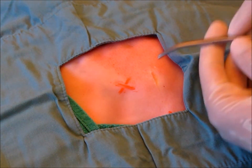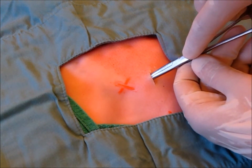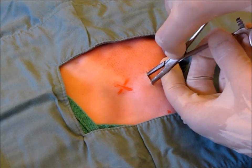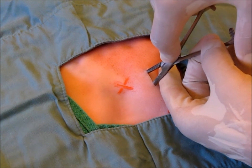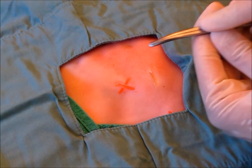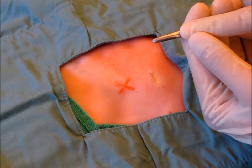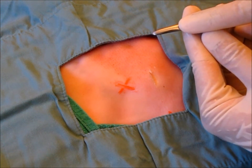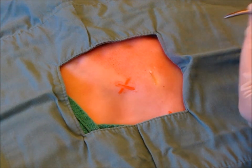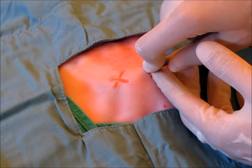Again, using the kelly, advance it using a two-handed technique towards the intercostal muscles, taking care to avoid the neurovascular bundle on the inferior aspect of the superior rib. Once the intercostal muscles are reached, you may spread the kelly, thereby opening up the intercostal muscles and exposing the pleura. Again, with the kelly clamp closed, advance the kelly using a two-handed technique, keeping your index finger approximately two centimeters from the tip of the kelly clamp. This step is essential, as when you puncture the pleura, it prevents the kelly from thrusting into the thoracic cavity, while avoiding the neurovascular bundle on the inferior aspect of the superior rib.